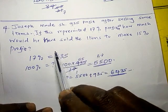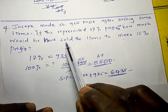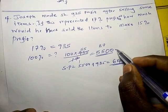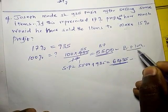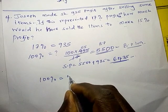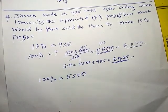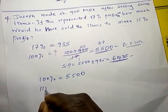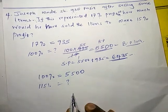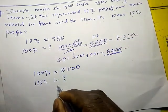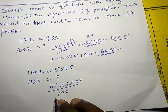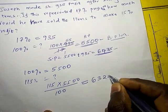The question asks: at how much would he have sold the items to make a 15% profit? That is simple. The buying price is always 100%, so 100% equals 5500. For a 15% profit we ask: what is 115%? That is 115 times 5500 divided by 100, which gives us 6325 shillings as the selling price for a 15% profit.